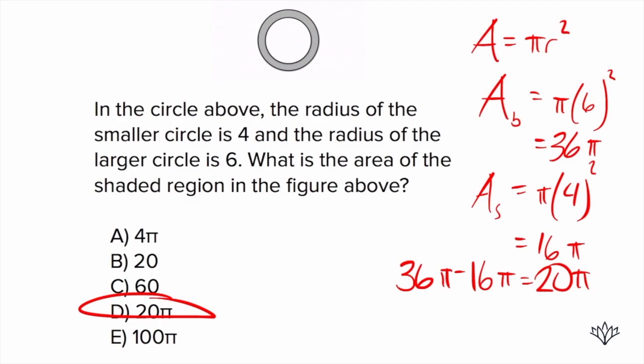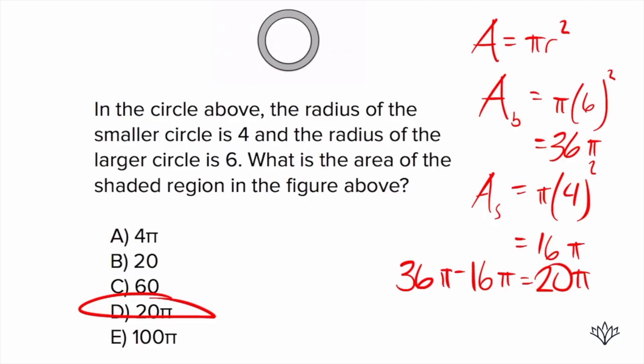For this question, we took the area of the bigger circle, we took the area of the smaller circle, and we subtracted, and that left us with the shaded region. That's what will work for all questions like this.